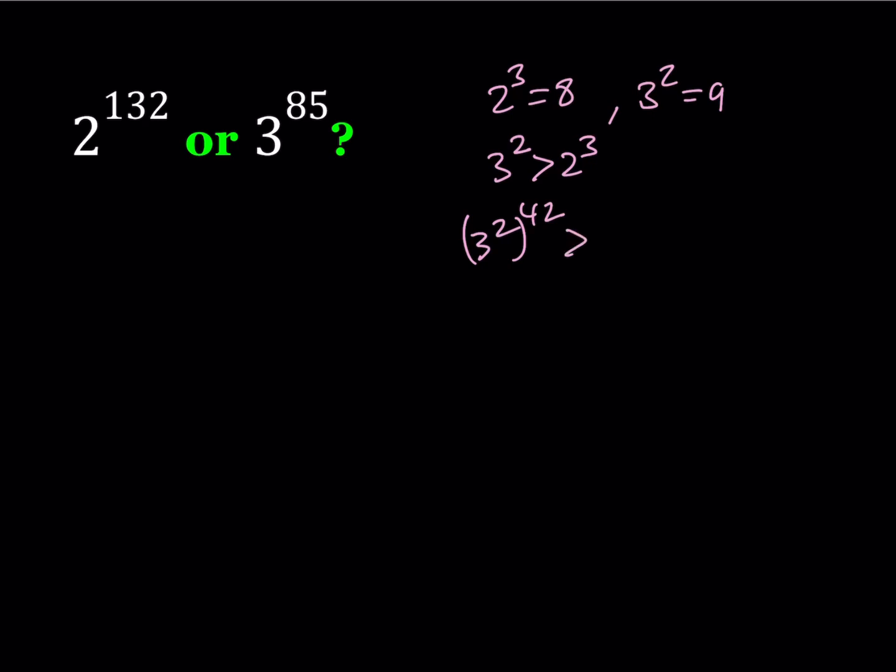And then on the other side you're going to have 2 to the power 3 to the power 42. Now this is a true inequality because we started off with a true inequality. Let's see if this is going to bring us closer.